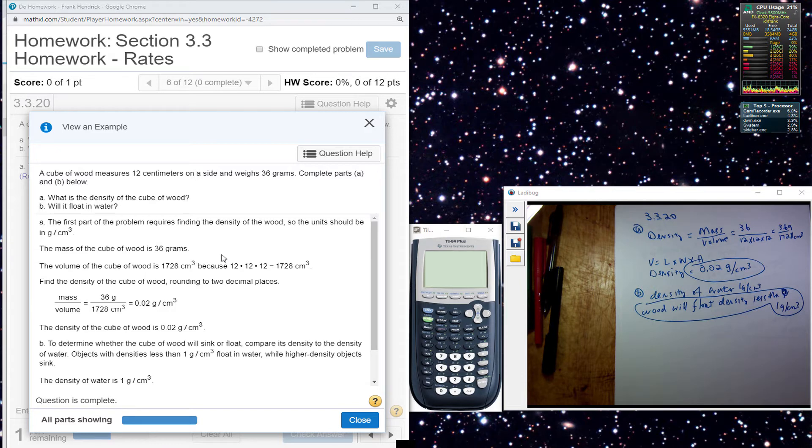In this particular problem here, a cube of wood measures 12 centimeters on a side and weighs 36 grams. Complete parts A and B below. What is the density of the cube of wood?